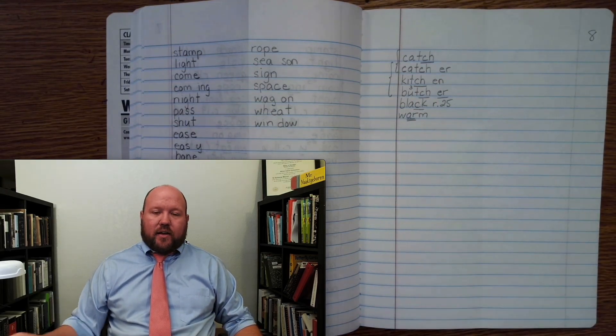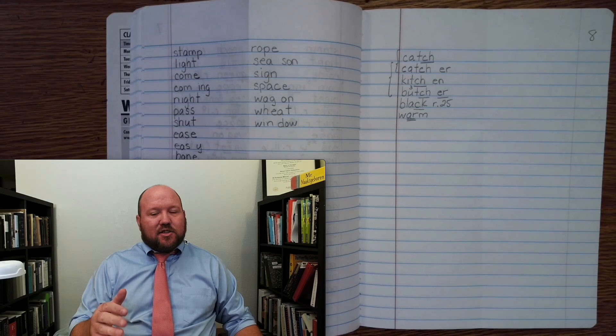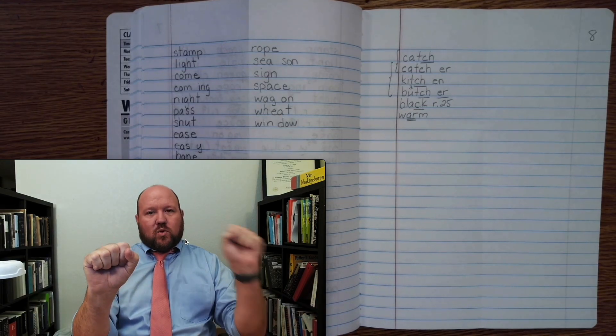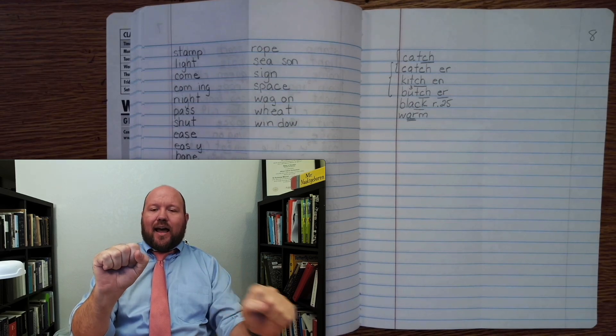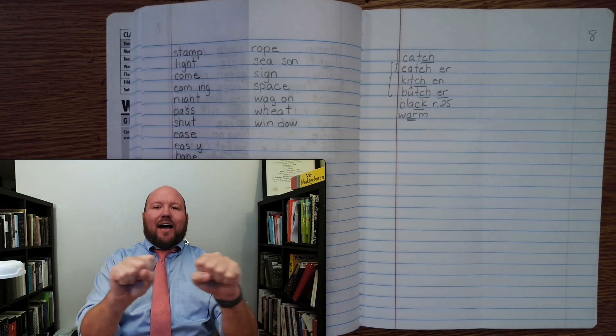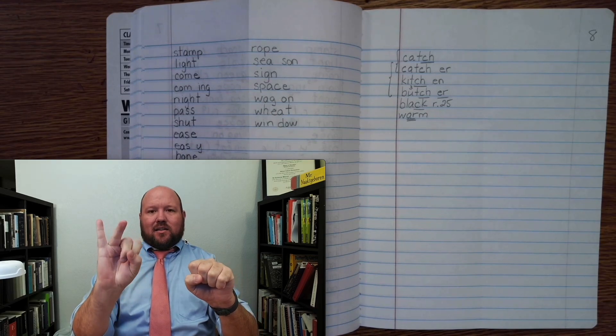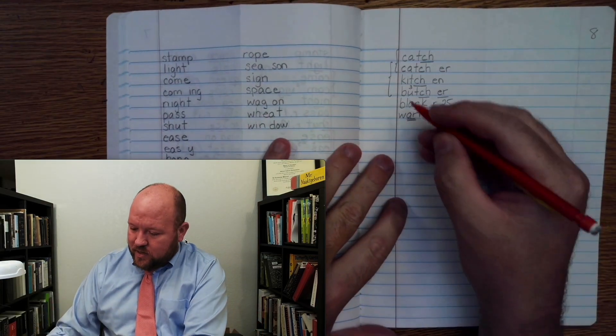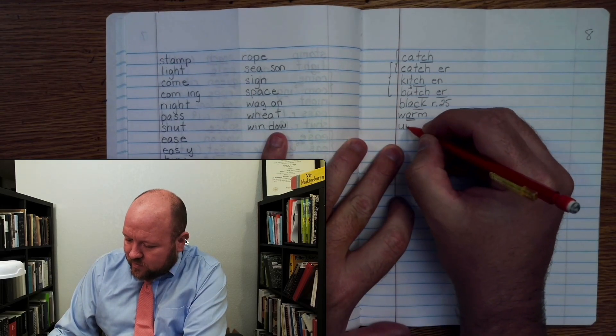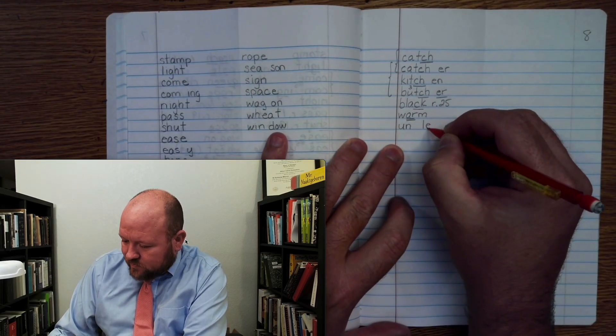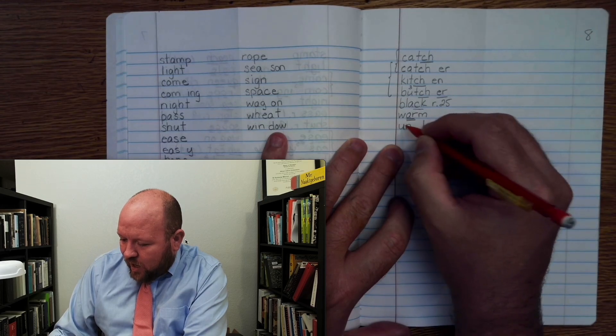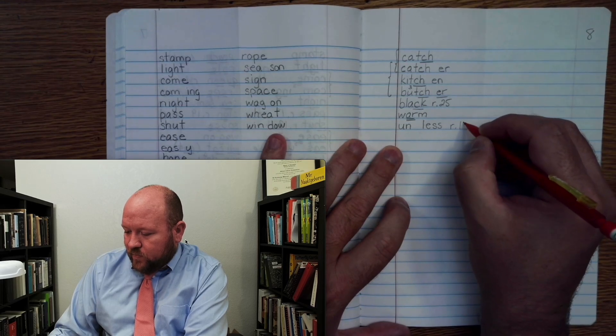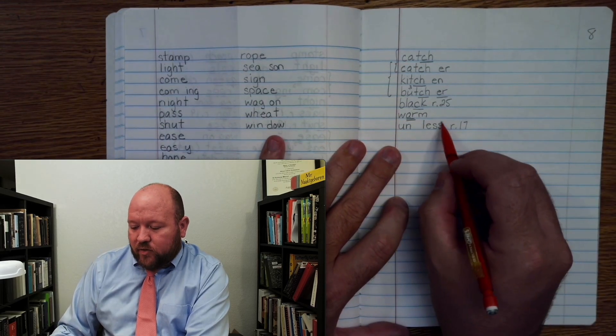Next we have unless, so like it's not going to happen unless you do this. Unless. Prefix UN, base word LESS. I write UN, add LESS to make the word unless. Unless. Rule 17. Words in an S often double.